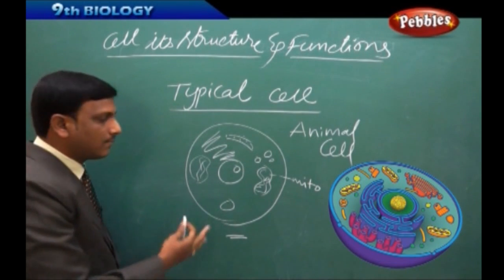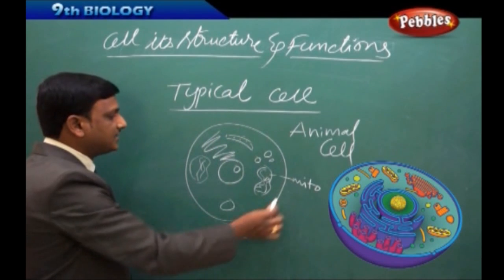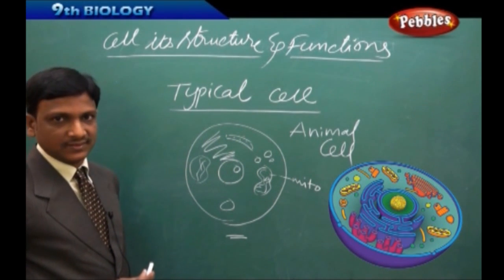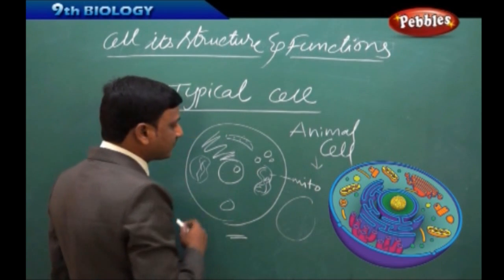So, a typical cell may not exist as it is. We are drawing a generalized diagram of animal cells. That means, different cells of animals have different kind of cell organelles.